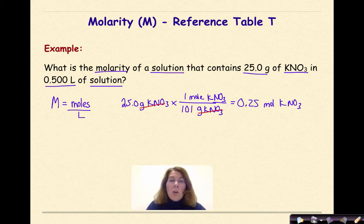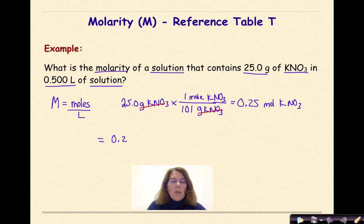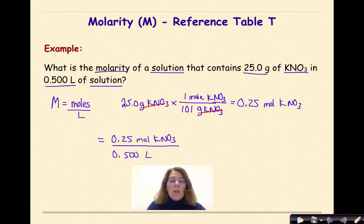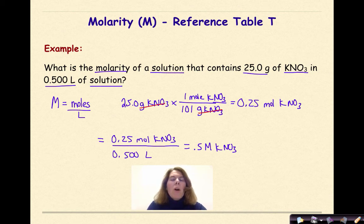Now we have moles, so we can find molarity. Molarity is equal to moles over liters. The number of moles we found was 0.25 moles of KNO3, and they gave us 0.500 liters of solution. So when we divide 0.25 by 0.5, our answer will be 0.5 molar KNO3. That's our final answer. When they give you the mass, you convert to moles; they give you liters, so you do moles over liters to get molarity.